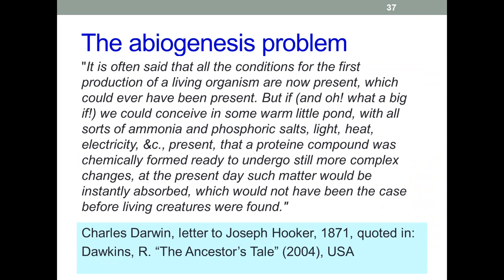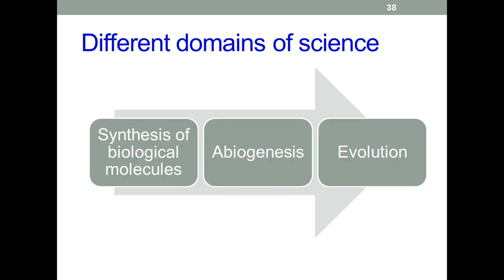Another problem is that we live on a planet that has been teeming with life for billions of years. If there was an abiogenic process starting somewhere, it would probably be overwhelmed by the biology that already exists. Darwin spotted this problem 140 years ago, mentioned in a letter to Joseph Hooker. So we're unlikely to find abiogenic processes on Earth. Before we get any further, we ought to clarify different domains of science: the abiogenic synthesis of biological molecules is distinct from evolution — these are different scientific domains and shouldn't be conflated. Evolution happens on populations of living systems. Abiogenesis and the synthesis of biological molecules are something which presumably happened before that.